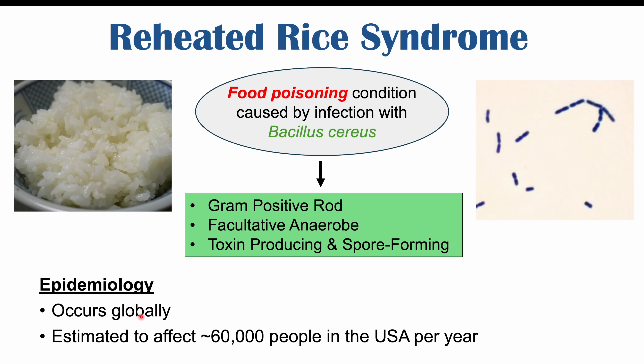We don't have many numbers for individuals who get infected around the world, but it has been estimated that at least 60,000 people in the United States can get infected with reheated rice syndrome per year. Again, it sounds like a large number, but it's relatively small compared to how many eat rice and how regularly they eat it.